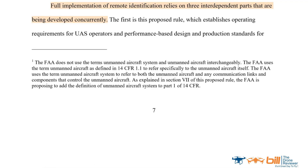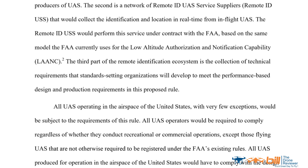From page 7 of the proposed rule: full implementation of Remote ID relies on three interdependent parts being developed concurrently. The first is this proposed rule, which establishes operating requirements for UAS operators and performance-based design and production standards for producers of UAS. The second is a network of Remote ID USS — service suppliers — that will collect identification and location information in real-time from in-flight UAS.